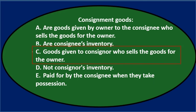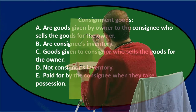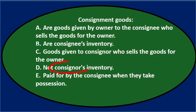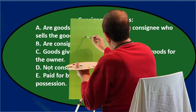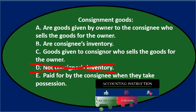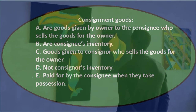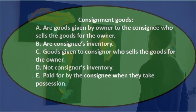Option C says goods given to consignor who sells the goods for the owner — that looks a lot like A, so we'll keep it for now. Option D says not consignor's inventory. The consignor is the painter — the owner of the inventory — who just doesn't have physical possession since it's at the restaurant. So it's not D. Option E says paid for by the consignee when they take possession. That's the difference between buying the inventory and it being on consignment — the restaurant isn't paying for the paintings, just holding and displaying them. So that's not correct either.